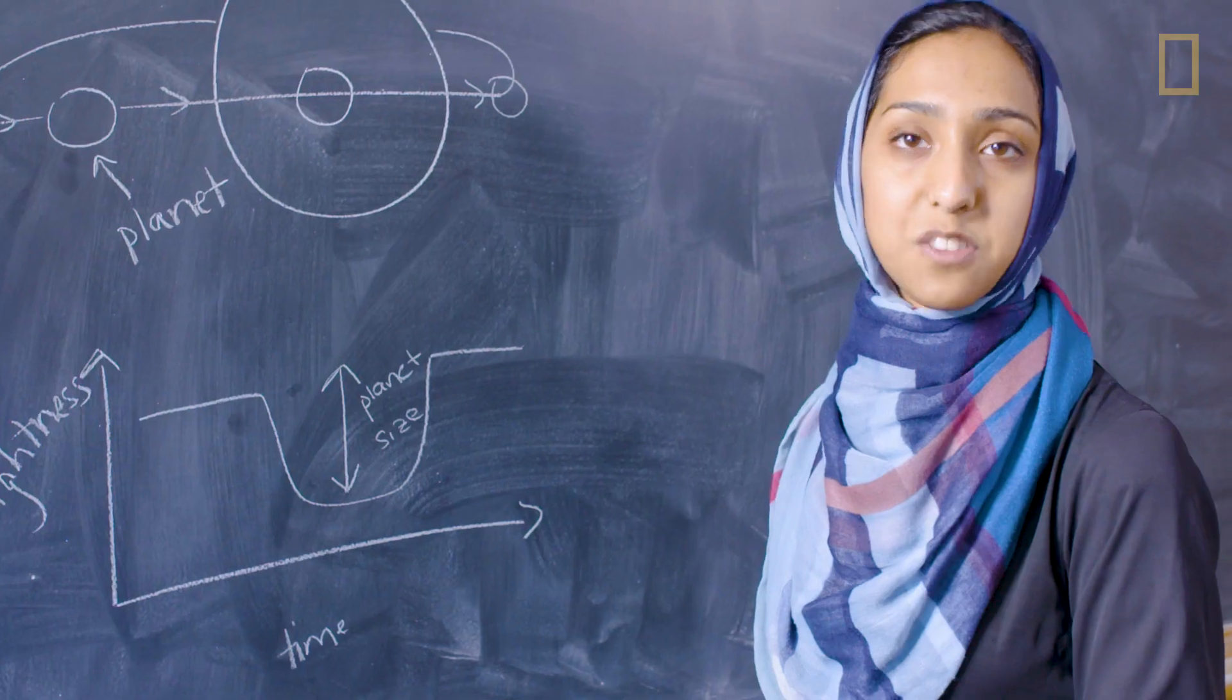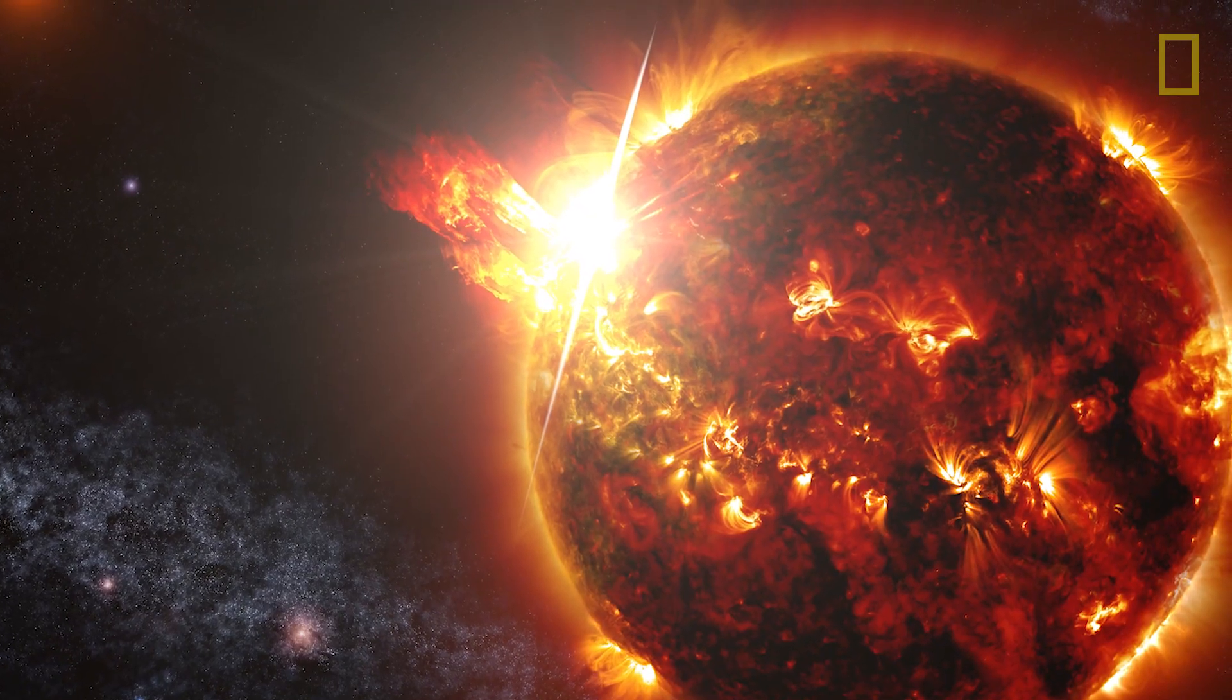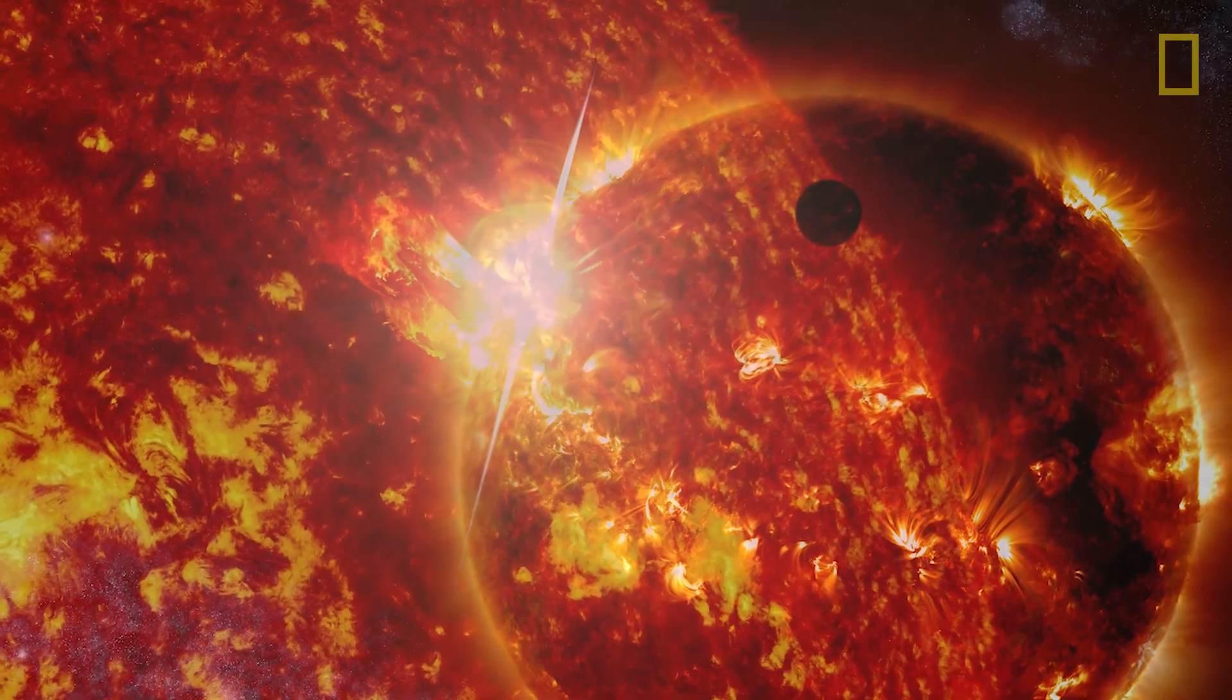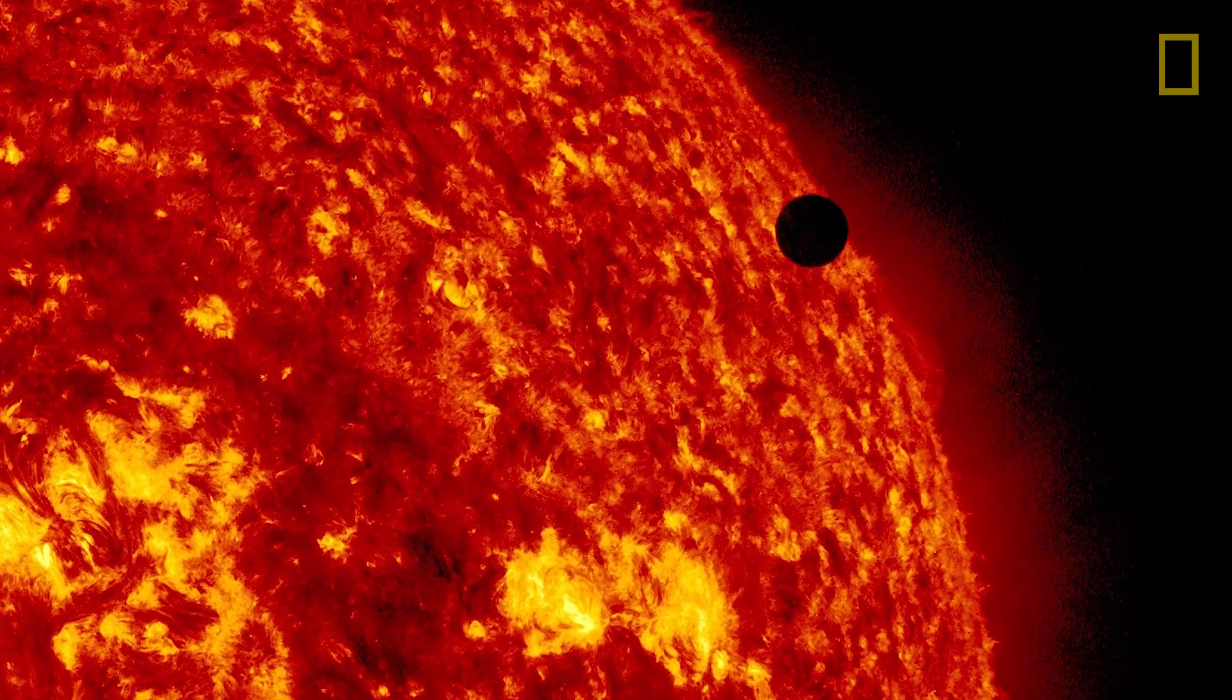This dip tells us the size of the planet. By measuring a star's temporary dimming, Munaza can estimate everything from the size of an exoplanet to its temperature.